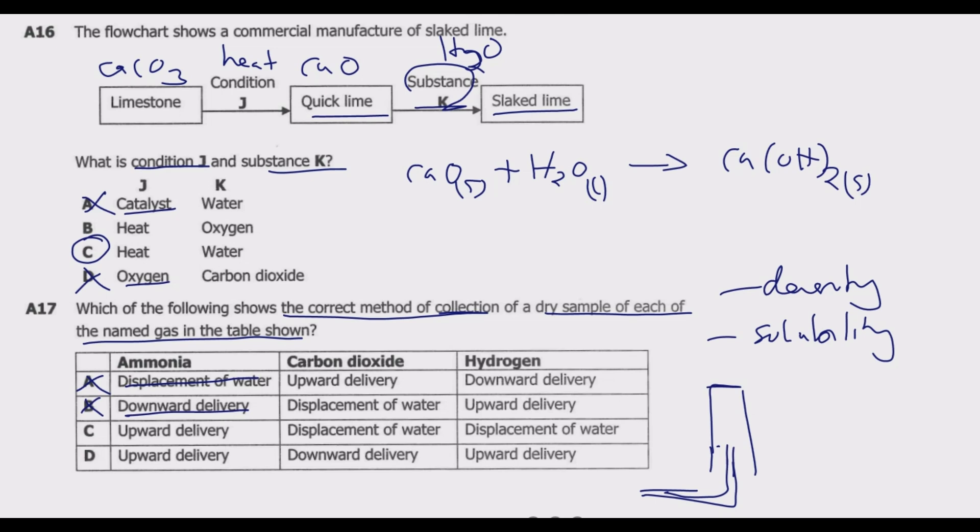When you come to carbon dioxide, carbon dioxide is slightly soluble in water, so we can't use water displacement. Because carbon dioxide is denser than air, we use the downward delivery method. We have the collection here and pump it in like this. You notice that C is out because it's soluble, so we remain with D.